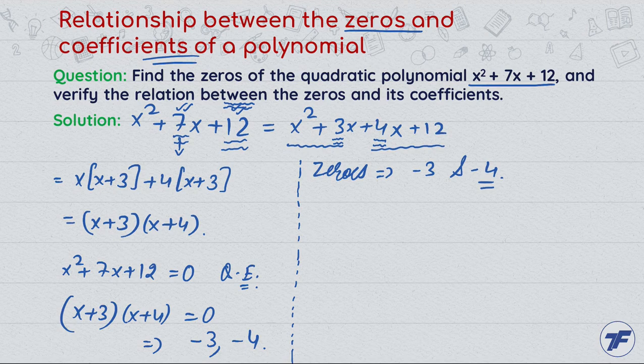Now what are we going to do? We have to verify the relation between the zeros and its coefficients. First of all, I will talk about sum of the zeros.